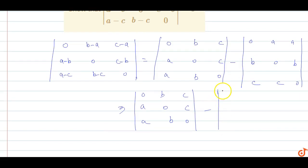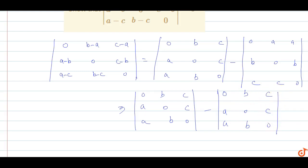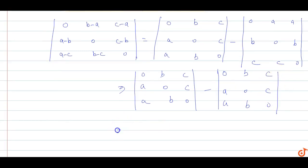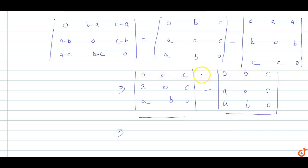Now, the transpose of the second determinant — taking the transpose — gives us: zero, a, a; b, zero, b; c, c, zero. As you can see, this determinant equals the first determinant. Each value of this equals the corresponding value of that determinant.